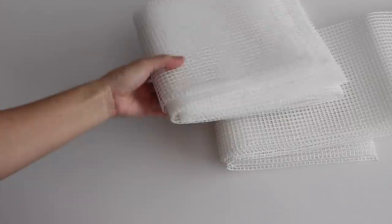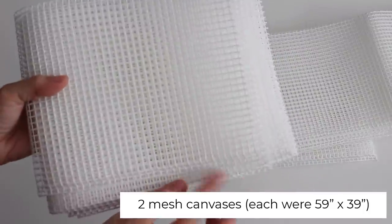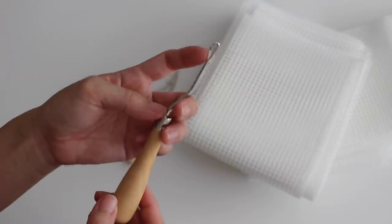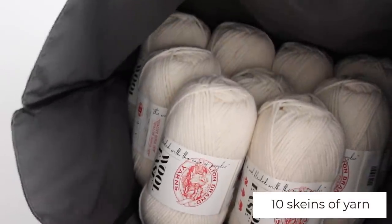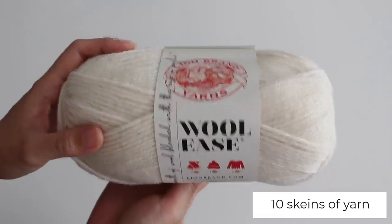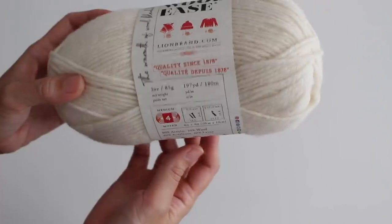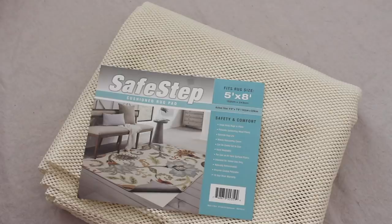I went on Amazon and ordered 2 mesh canvases, latch hooks, and 10 rolls of yarn. I also bought a 5 by 8 foot rug pad from Ross.